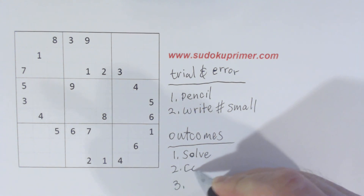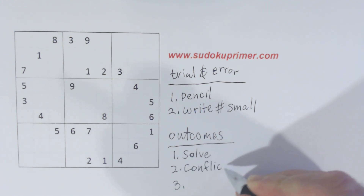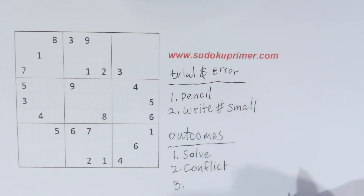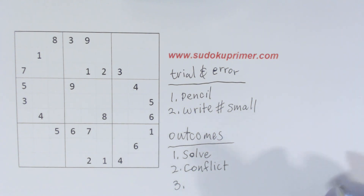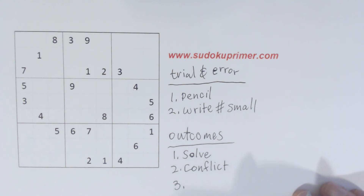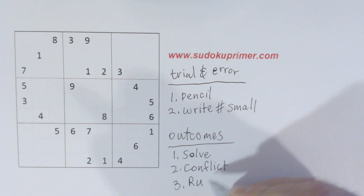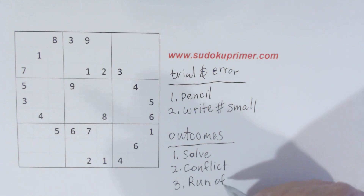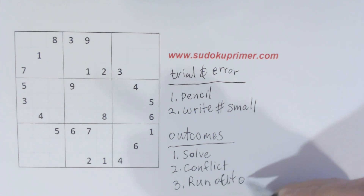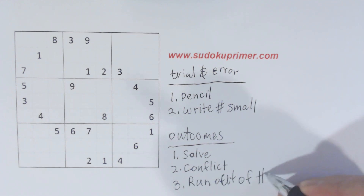The second outcome is if you choose the wrong cell for that number, you will eventually have a conflict. That's where you try and there's only one place for a number to go, but there's already that same number in that row, column, or box, or you just can't put numbers in correctly. That's pretty obvious when you get to that point. The last outcome is you run out of numbers to place.